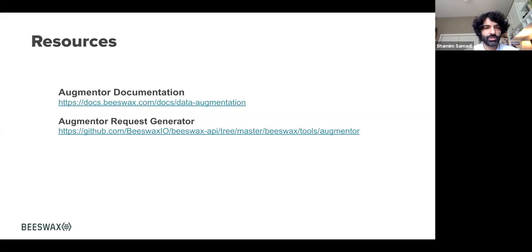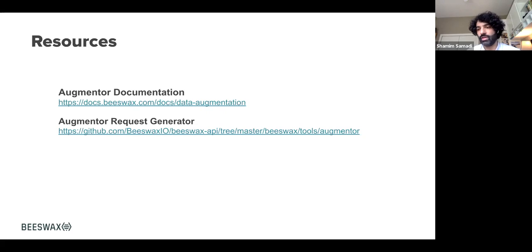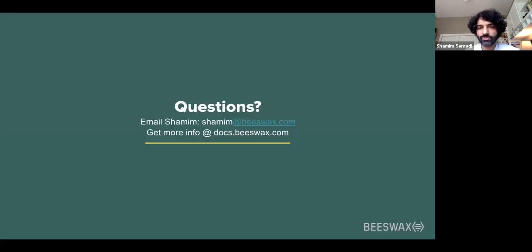Before I take questions, there are a couple points of documentation that are really helpful. The first is an overview of the data augmenter on docs.beeswax. The second is we have an augmenter request generator tool — if you want to test an augmenter locally before you deploy in production, it's a tool that will stream OpenRTB requests to an endpoint so you can test for data validation, correctness, and that sort of thing. With that, I'll take some questions. You could also email me directly if you're unable to ask it.